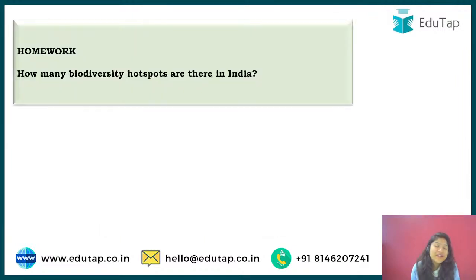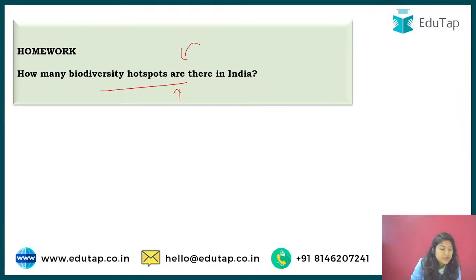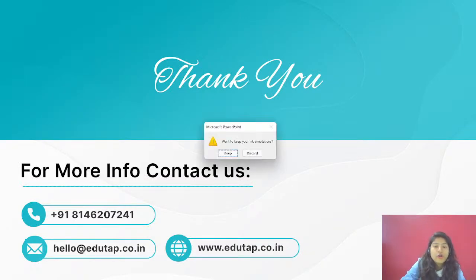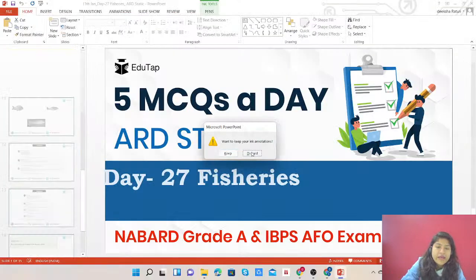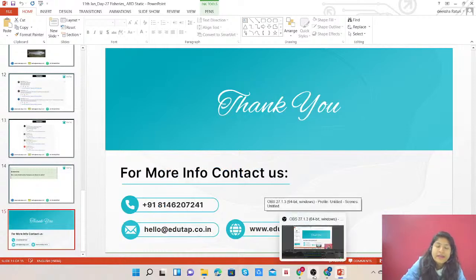The homework for today is: how many biodiversity hotspots are there in India? These are the types of random questions asked in your examination, and you should be aware of them, especially as the world is focusing on climate change. That is all for today. I hope you enjoyed the session and found it fruitful. If you have any queries, comment below and I'll definitely reply. For the next few days we are going to continue covering this fisheries chapter.